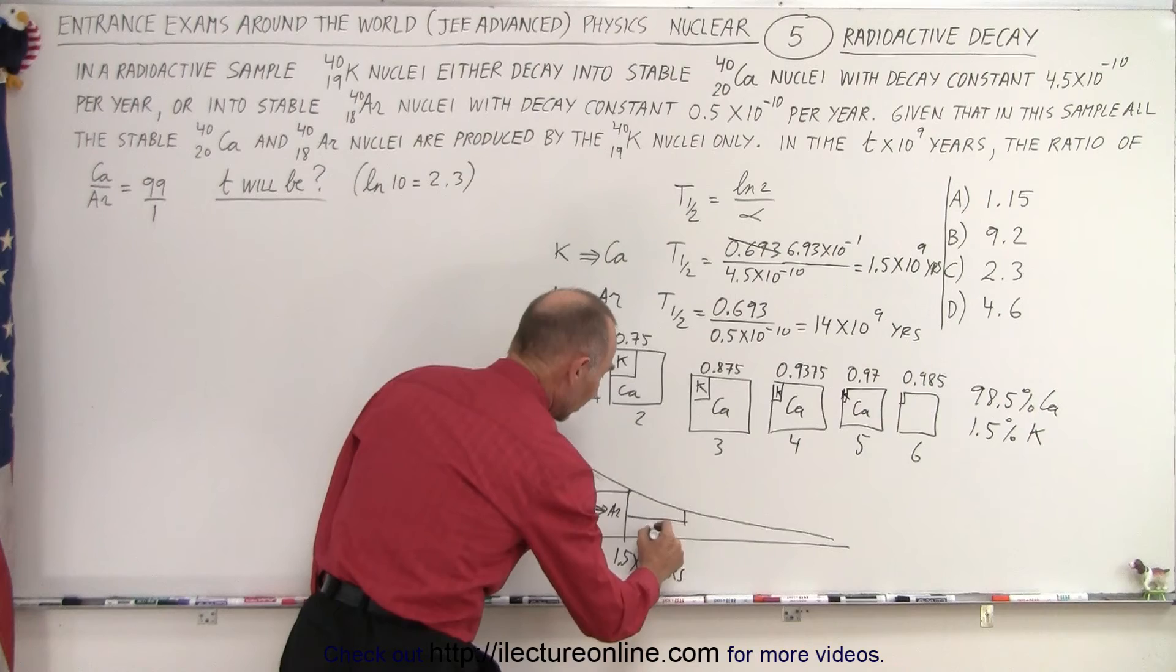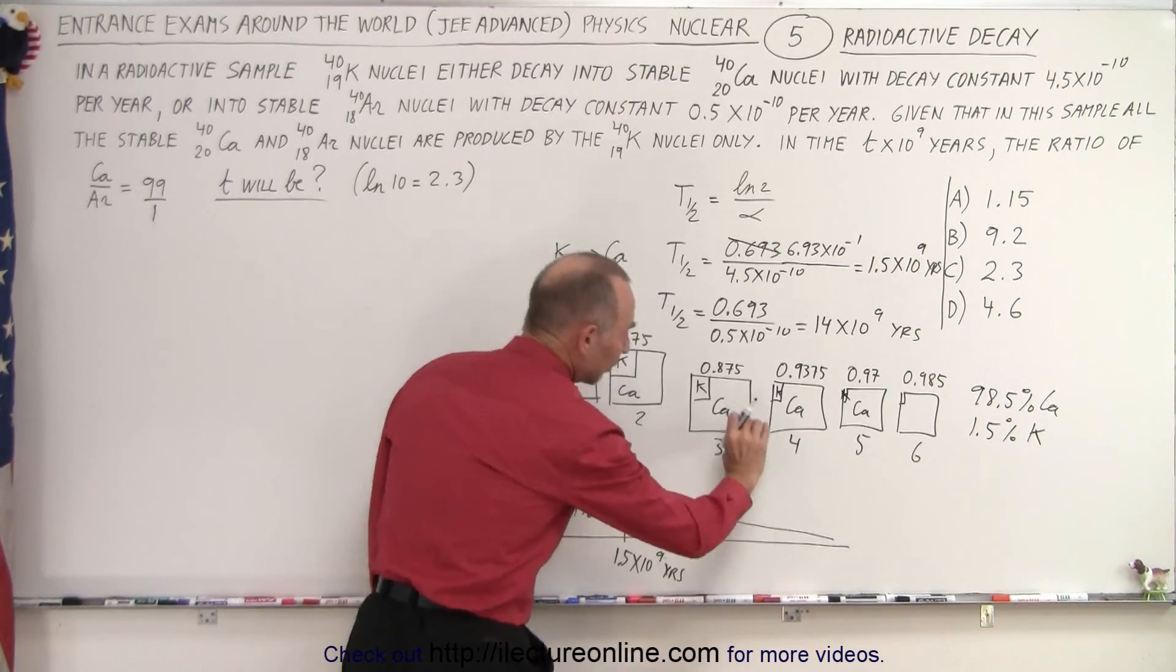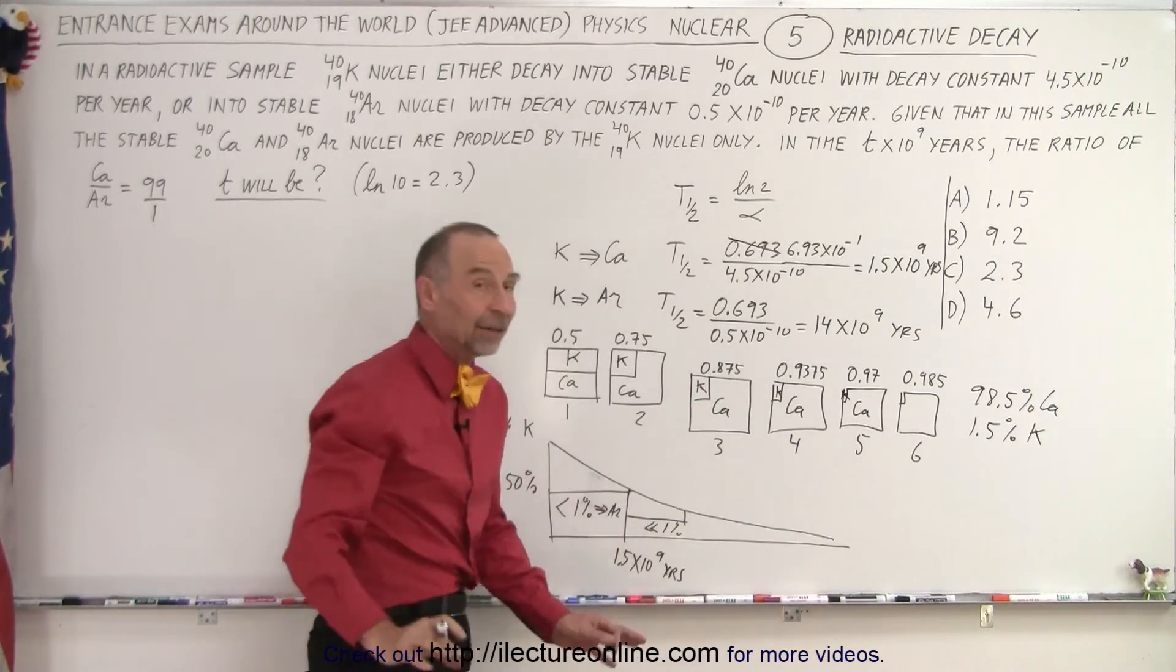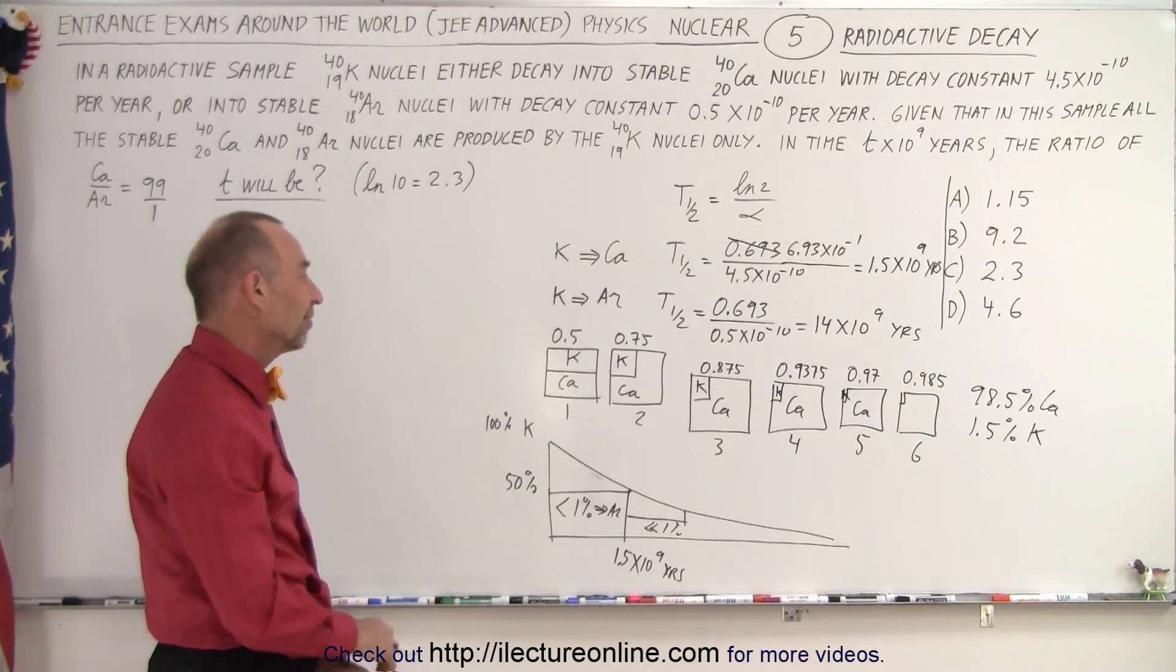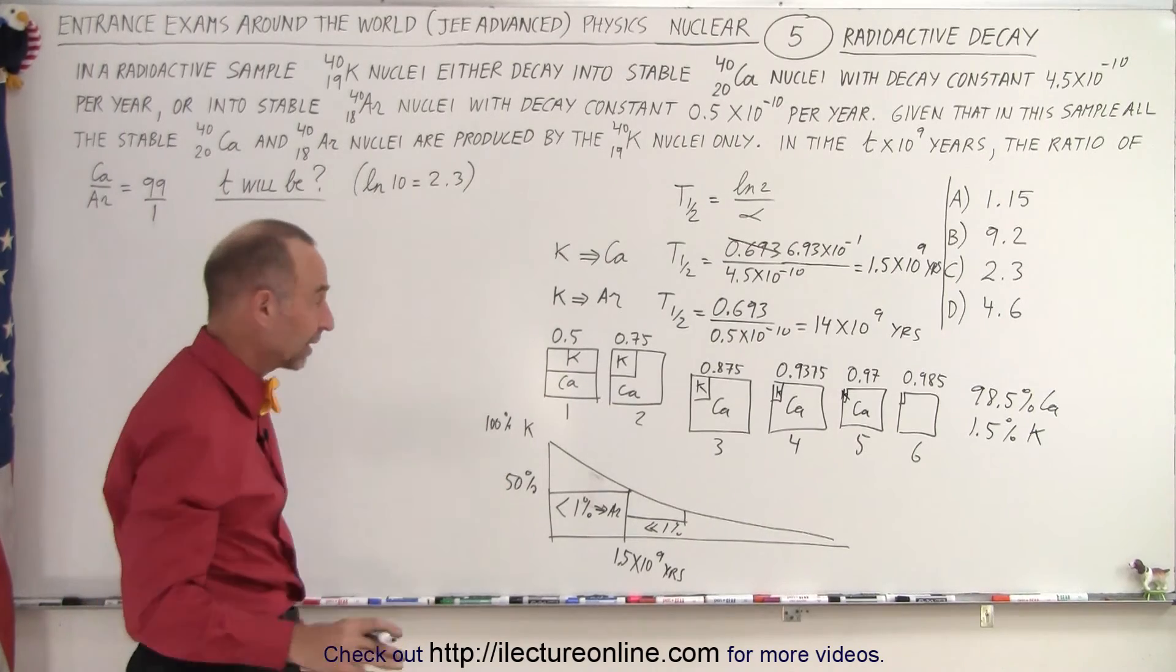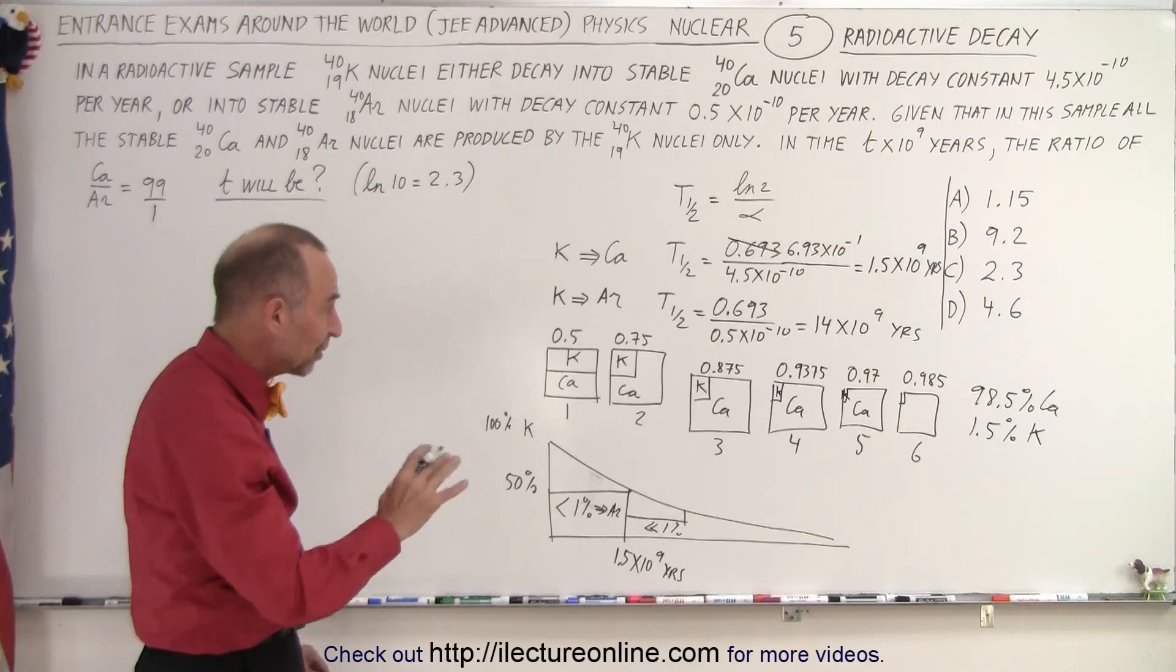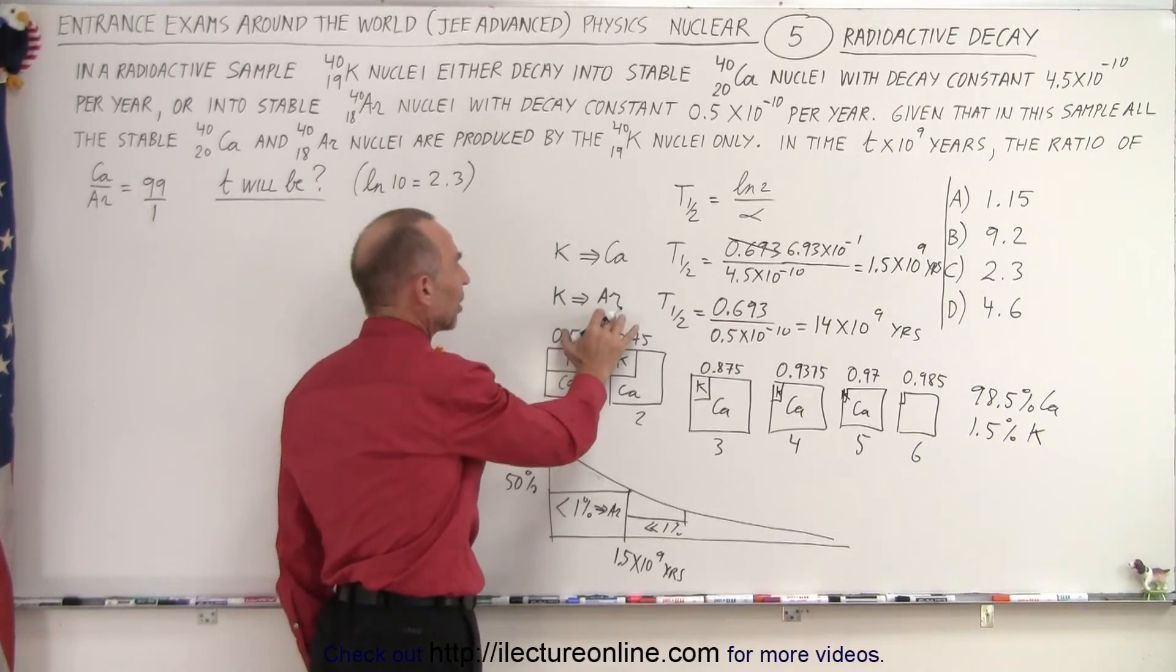So maybe less than 1% of what was there as potassium went into argon. And then at that point, there's so much less to be decayed into argon, it would be much less than 1%. And then at that point, there's so little potassium left that almost none of it would go into argon. So I would say that 1% or 2%, roughly speaking, without the calculator it's kind of hard to figure that out. But I would say about 1% or 2% of all the potassium has gone into argon.